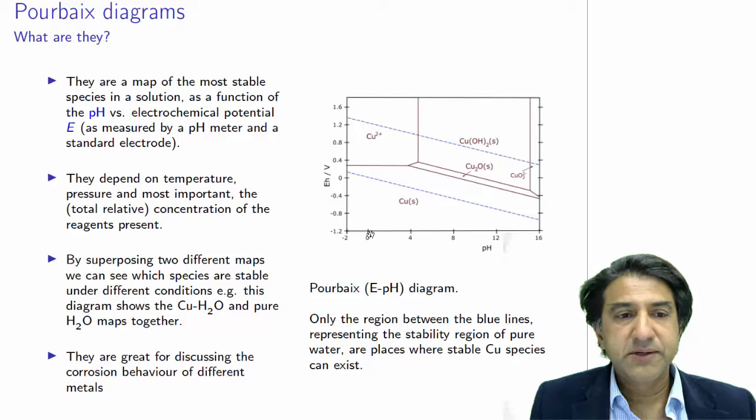For example, at low pH and at low electrochemical potentials, copper metal is stable. At high electrochemical potentials, voltages, these potentials are measured in voltages. At high voltages, Cu2+ is stable.